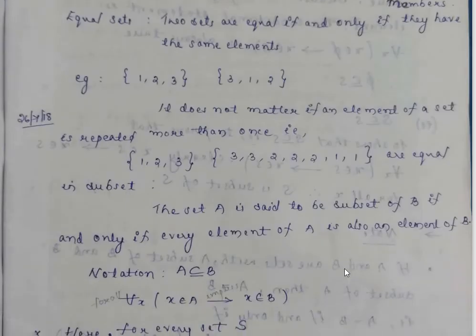Two sets are equal if and only if they have the same elements. Set {1,2,3} and set {3,1,2} — both have elements 1, 2, and 3, so they are equal. It does not matter if an element of a set is repeated more than once.